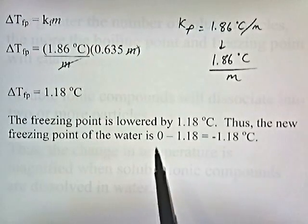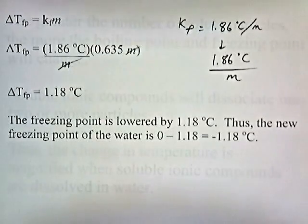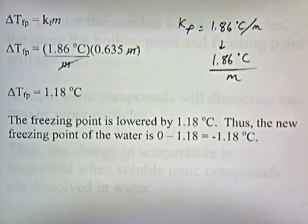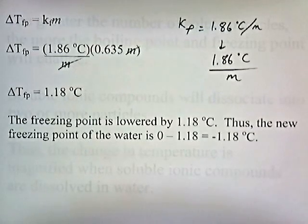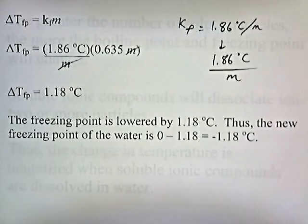It doesn't freeze at 0; it freezes at roughly 1 degree below 0. This is why salt is poured on roads during a cold, wet day. When you add salt to the roads, the salt dissolves into the water on the road. The water is less likely to freeze because it requires a colder temperature to freeze, keeping the road from icing up and making it safer to drive.